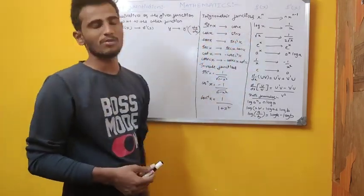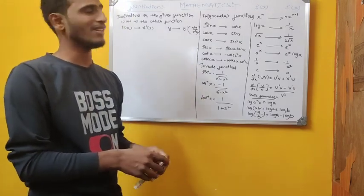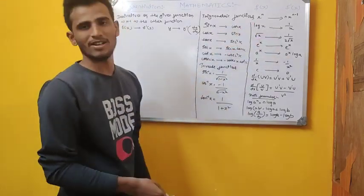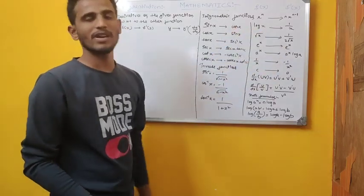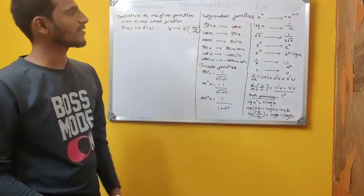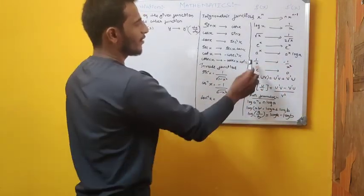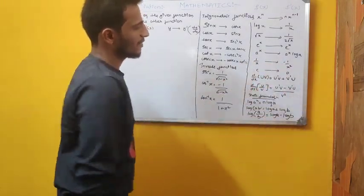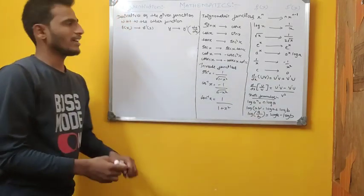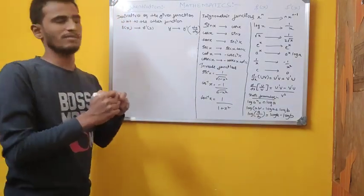These basic formulas are called in the second phase. x^n differentiates to n·x^(n-1). log x differentiates to 1/x. Root x differentiates to 1/(2√x). e^x differentiates to e^x. a^x differentiates to a^x·log(a). 1/x differentiates to -1/x². Differentiation of a constant is 0.